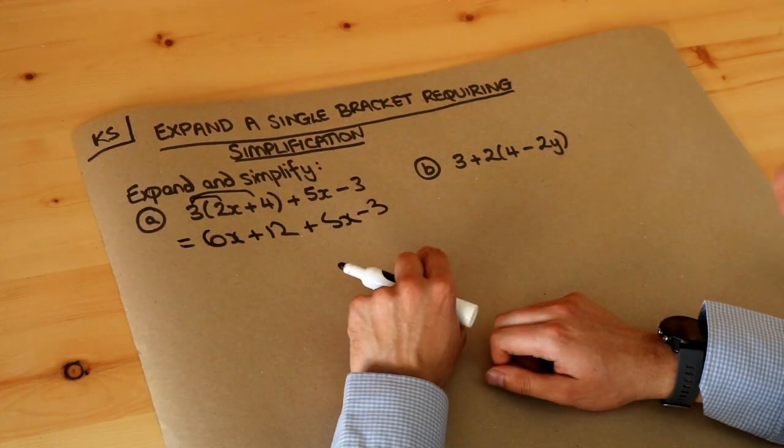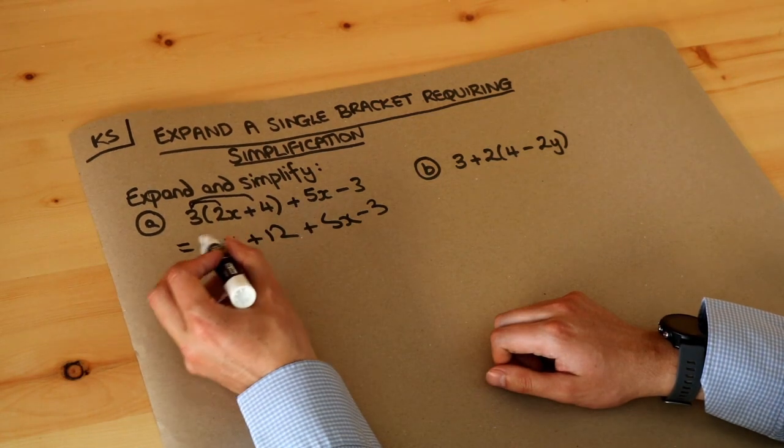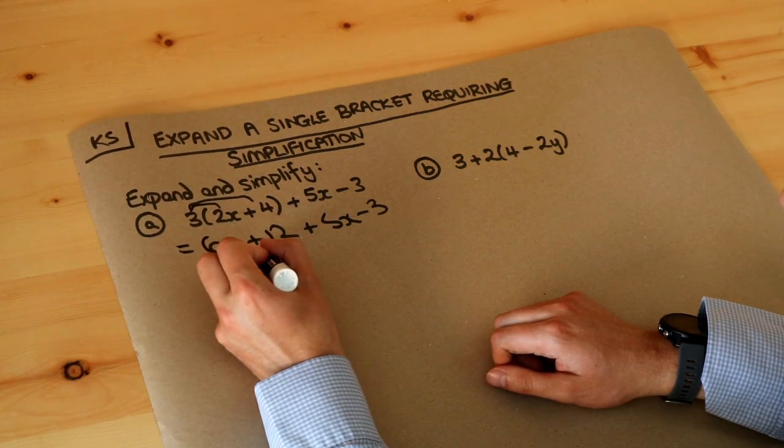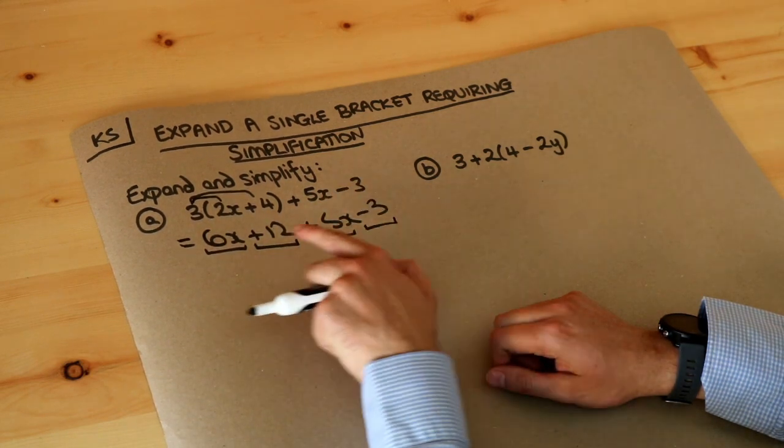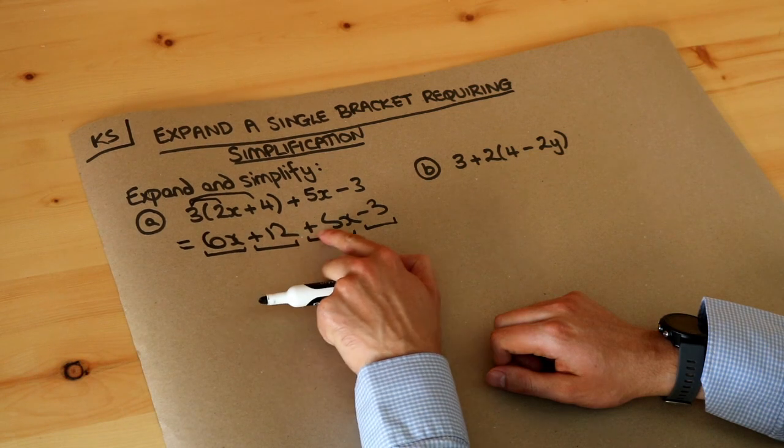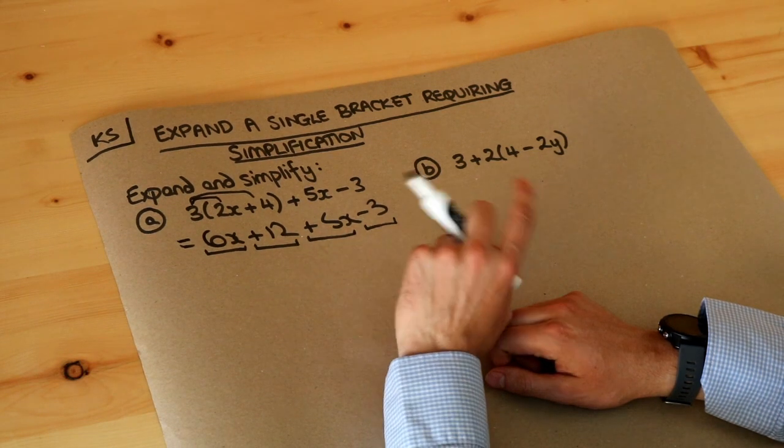But at this point we can simplify by collecting like terms. So some people like to underline each of the terms including the plus or the minus in front of the term so the plus goes with that 12 on the right of it, that plus goes to the 5x, the minus goes for that 3.